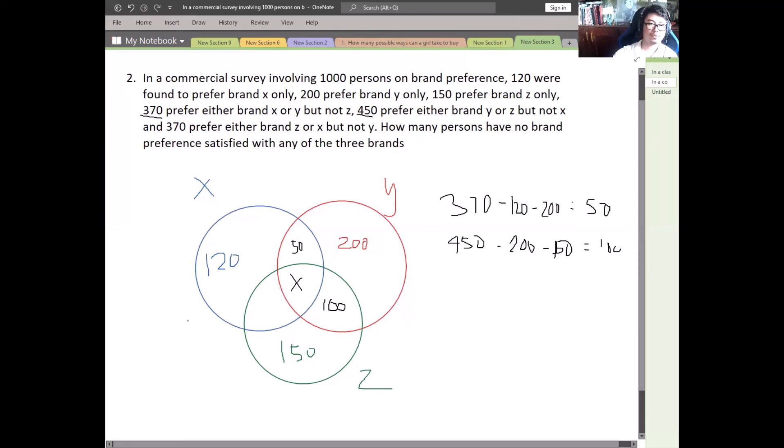Lastly, 370 preferred brand Z or X but not Y. So same procedure. So 370, 120 likes brand X and 150 likes brand Z. So all in all, that is 100.